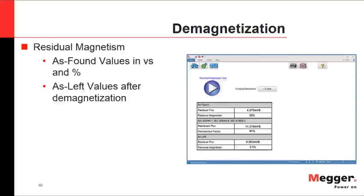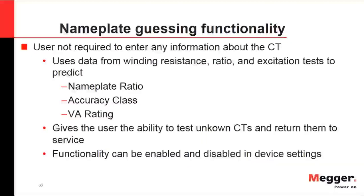Demagnetization in the MRCT also provides 'as-found' and 'as-left' values: before starting the process, you can see how much remnant magnetization exists in the CT core, and after demagnetization, what remnant magnetization remains. This information is provided to the user.